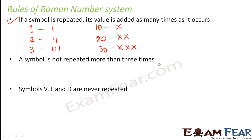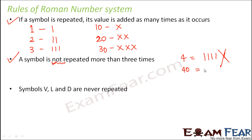So do you think that you can write 4 by repeating the symbol 4 times? You can't. That's because rule number 2 says that a symbol is not repeated for more than 3 times. So 3 times is the maximum number of times you can repeat any symbol. You cannot write 4 like this, you cannot write 40 like this, because they do not follow rule number 2.